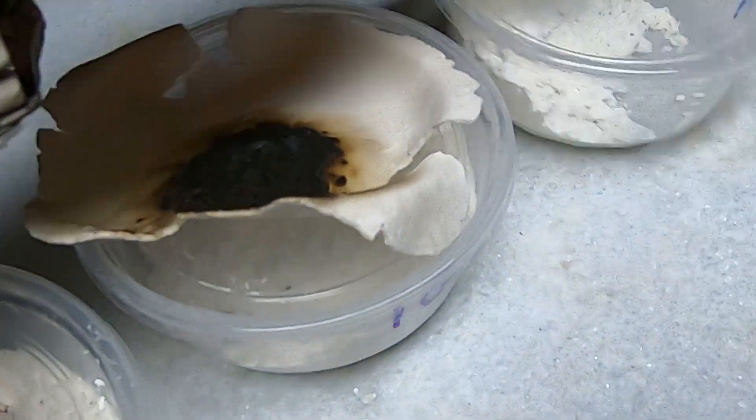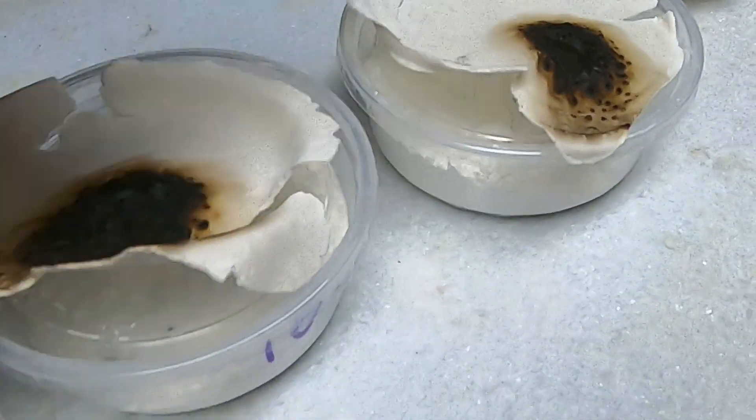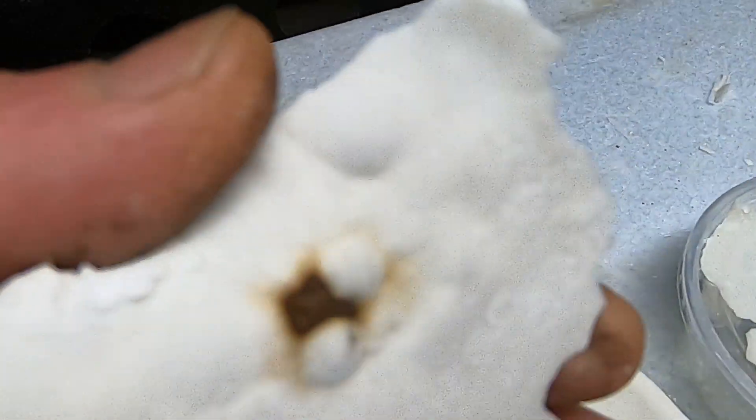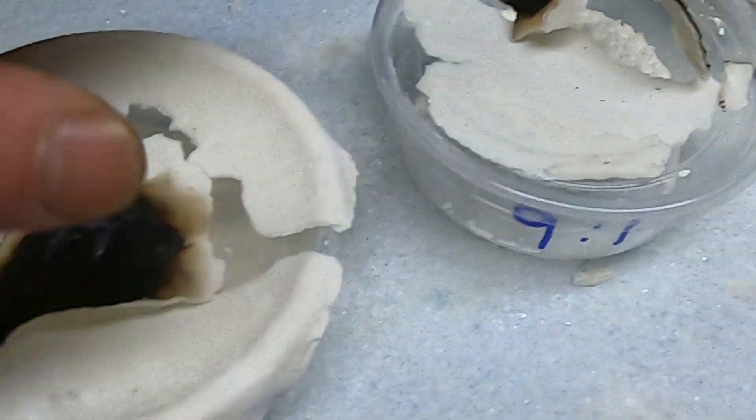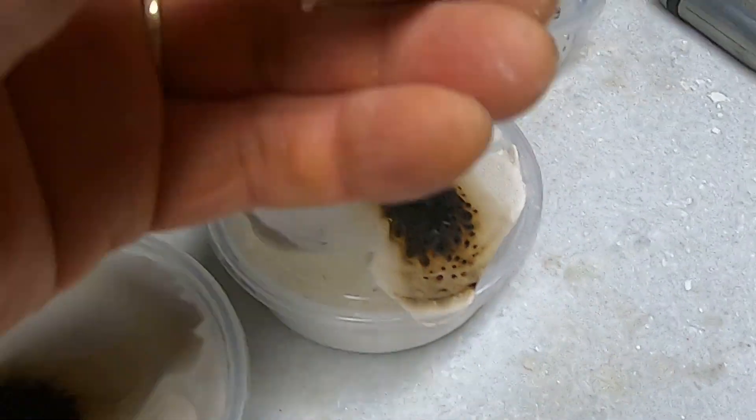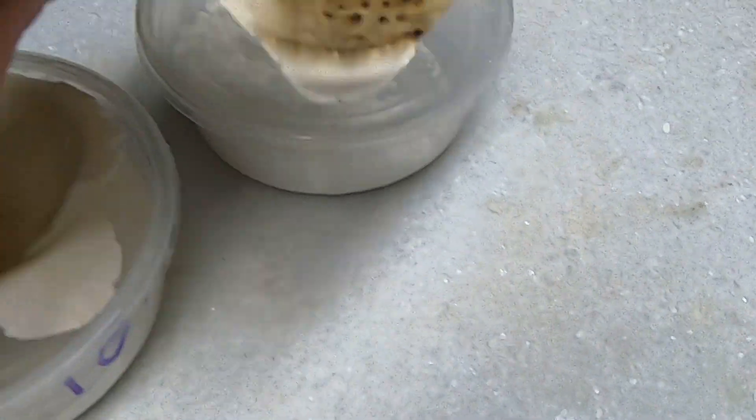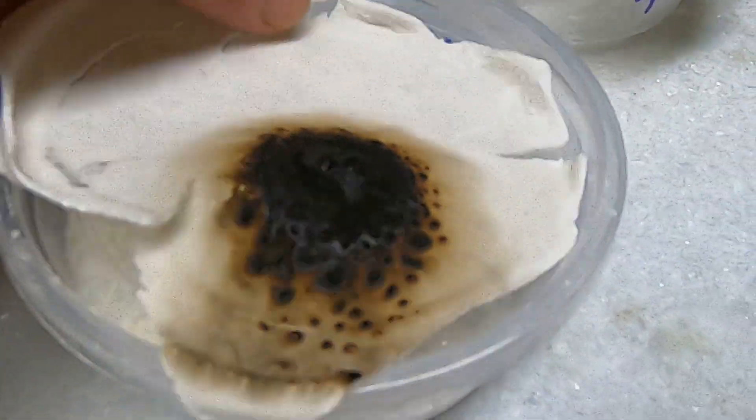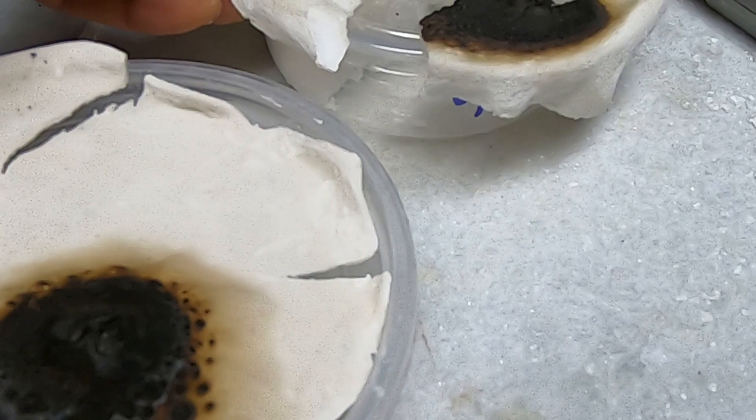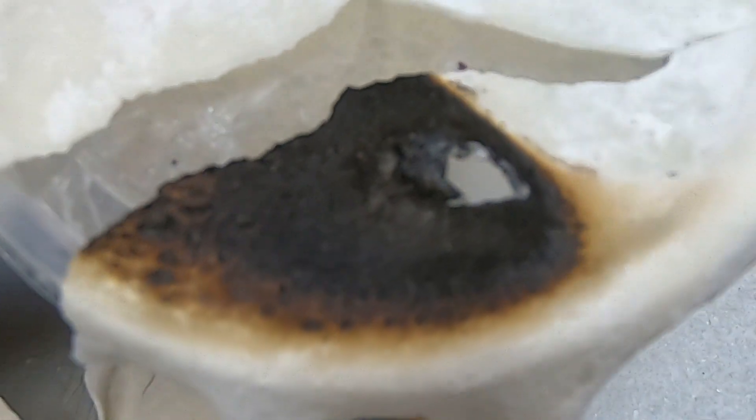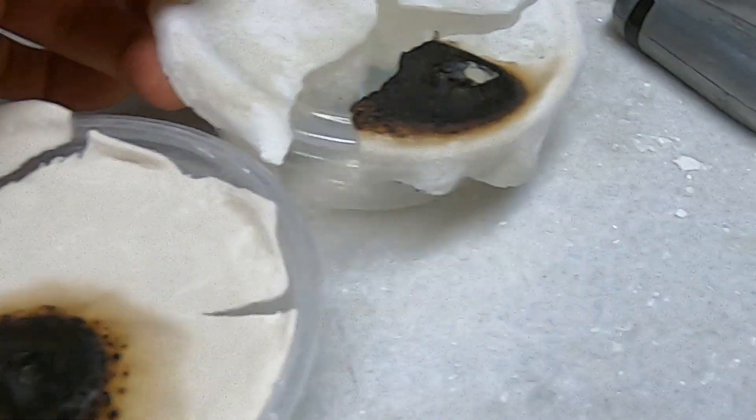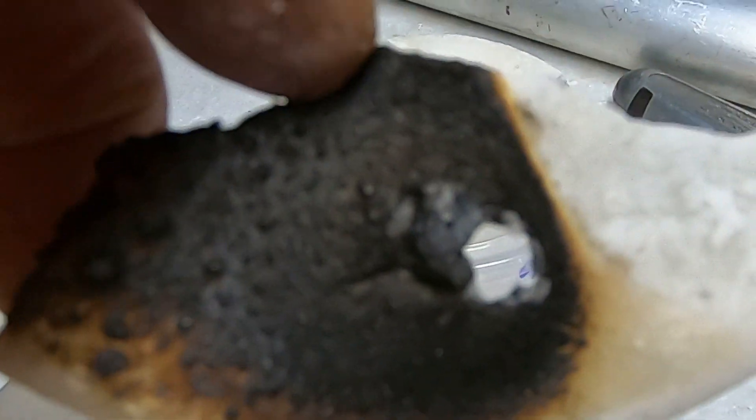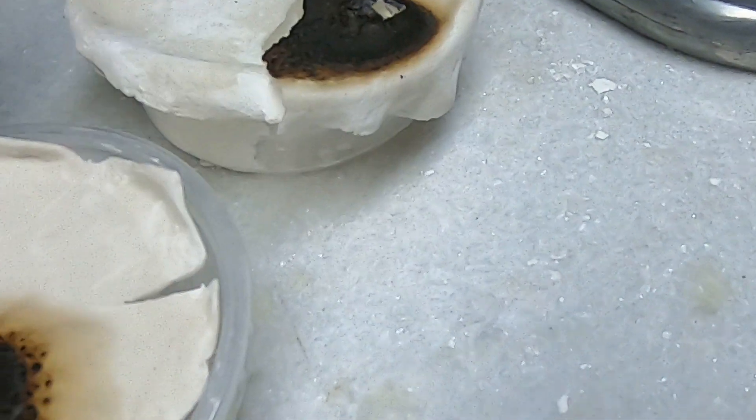I think the blistering on the bottom is more due to moisture than it is to the starlight operating correctly. There is our 11:1, and there's our baking powder. The baking powder one you can see burnt clean through.